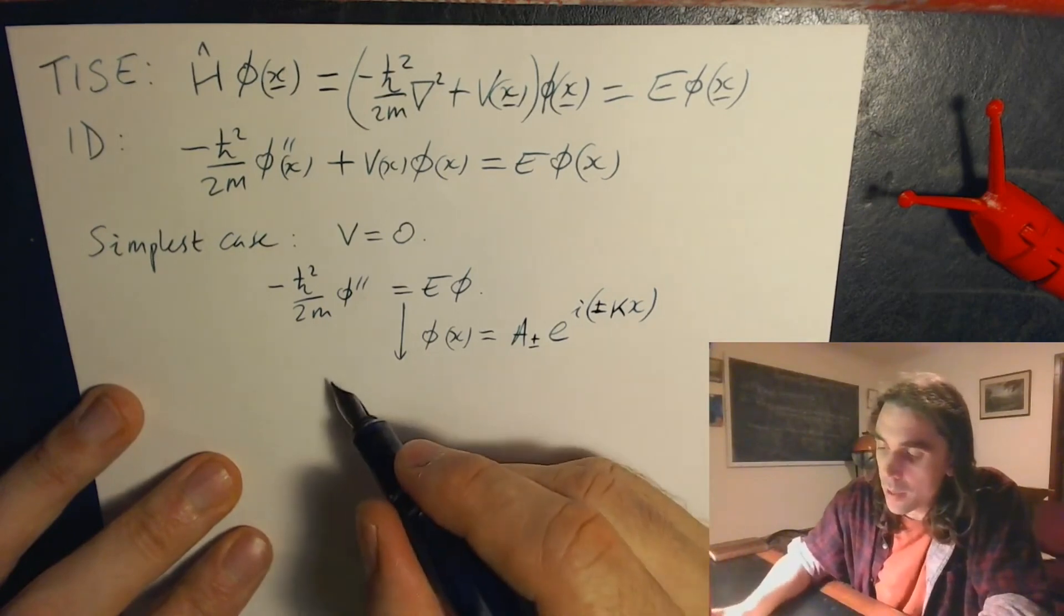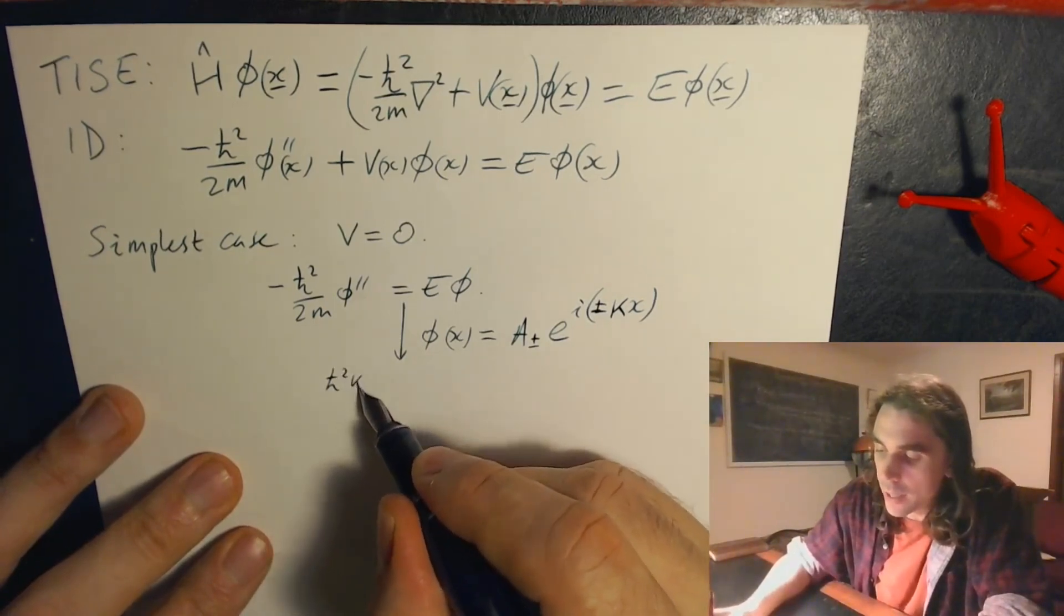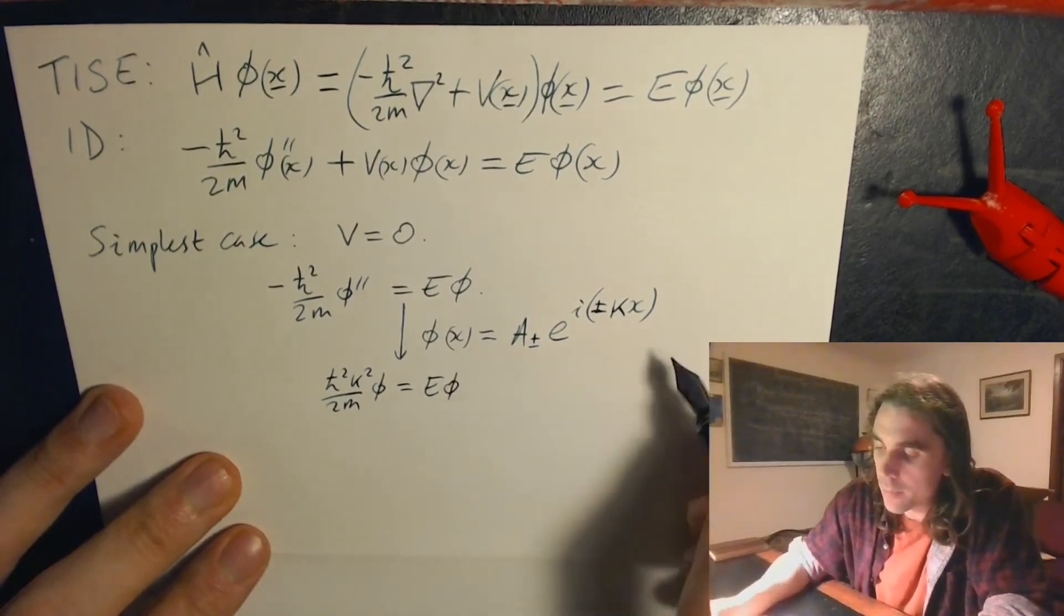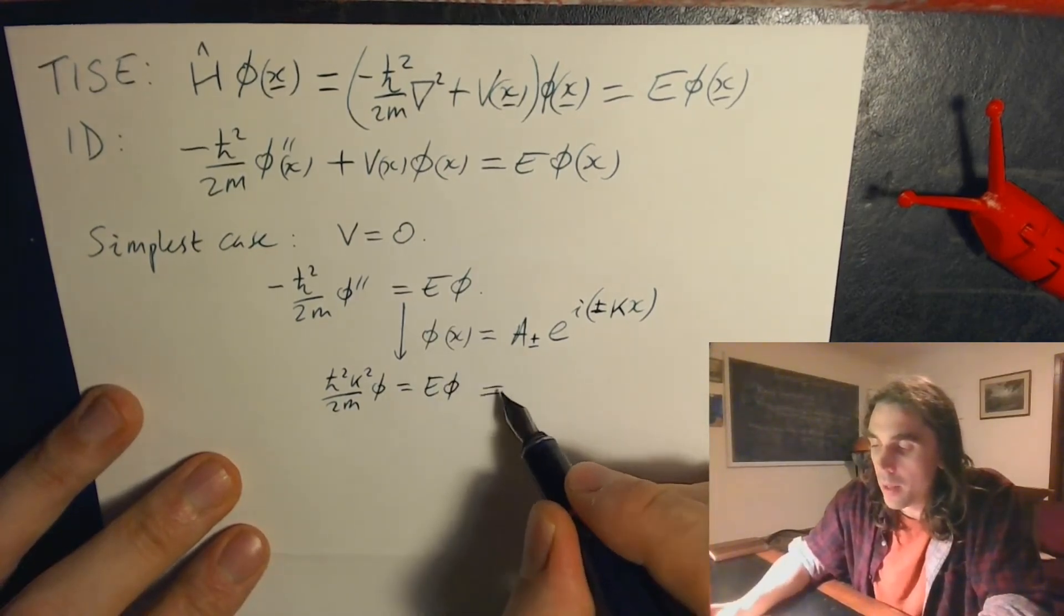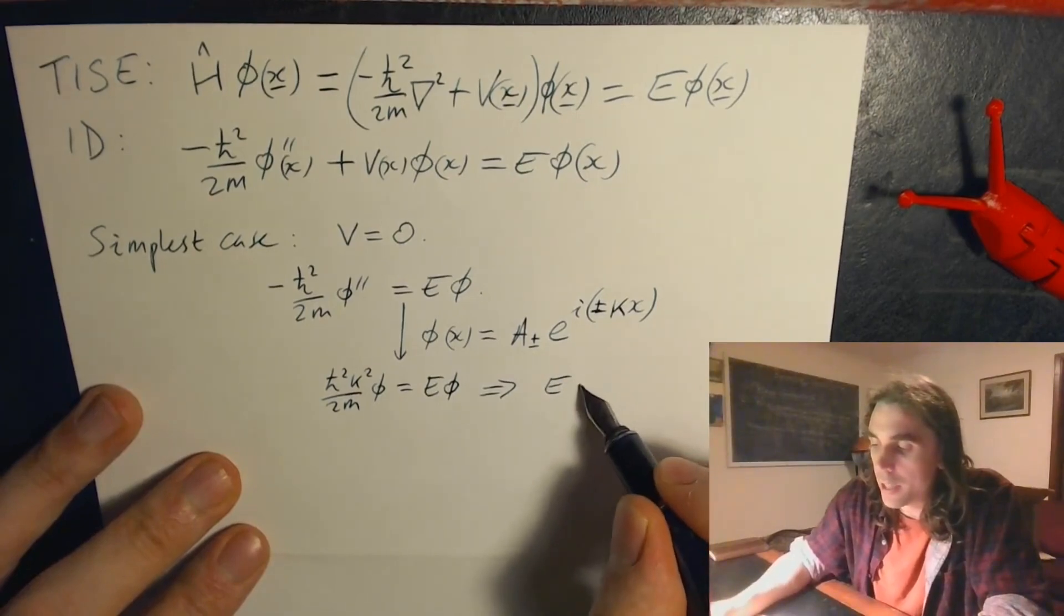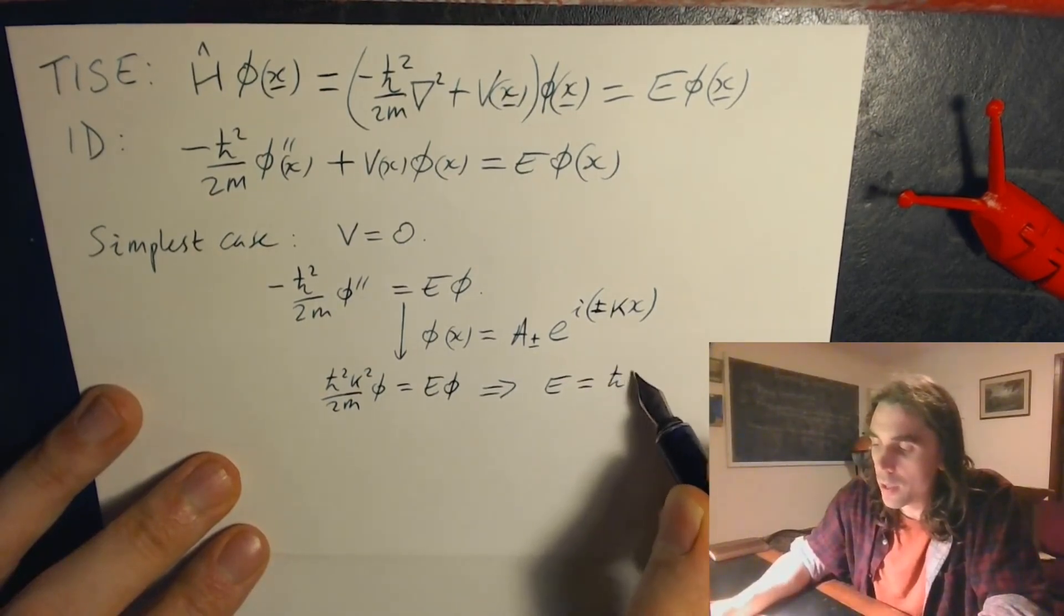When we substitute this in, we find that h bar squared k squared over 2m phi equals e phi. In other words, the energy eigenvalues e that we've solved for are equal to h bar squared k squared over 2m.